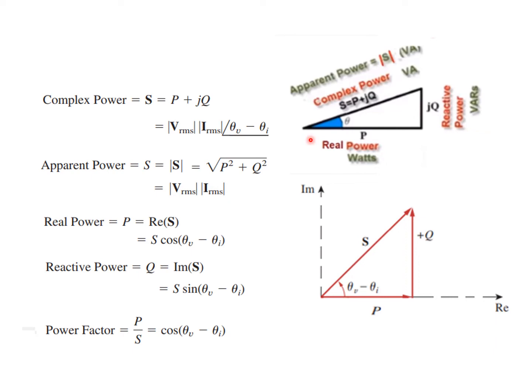Real power is the real part of S: S cosine(theta_V minus theta_I). Reactive power is on the imaginary axis: S sine(theta_V minus theta_I). A new term here is power factor — power factor is simply cosine of the angle, cosine(theta_V minus theta_I), or cosine of theta.